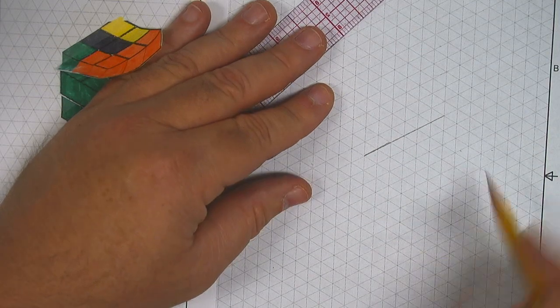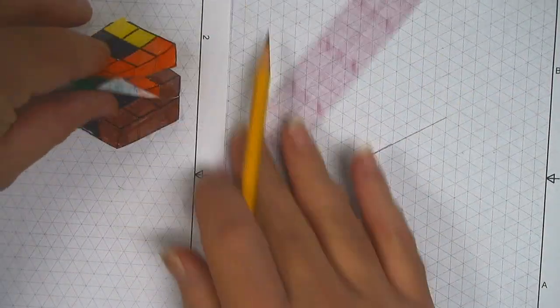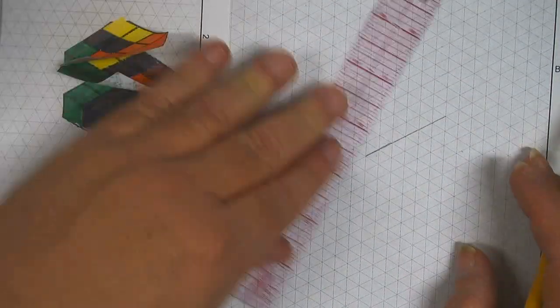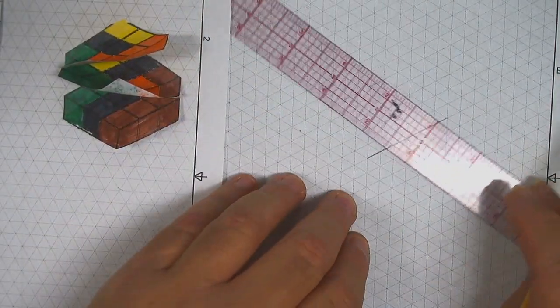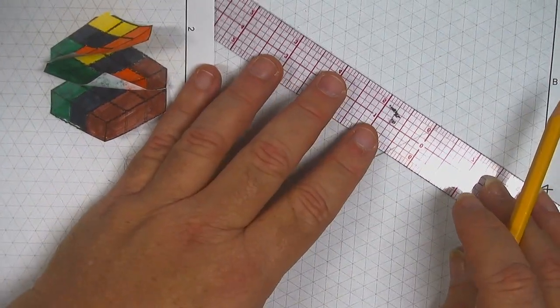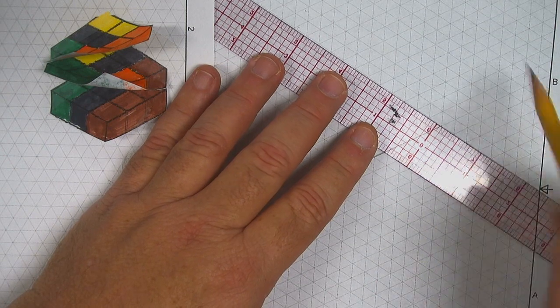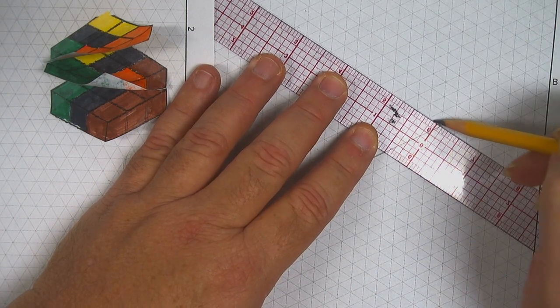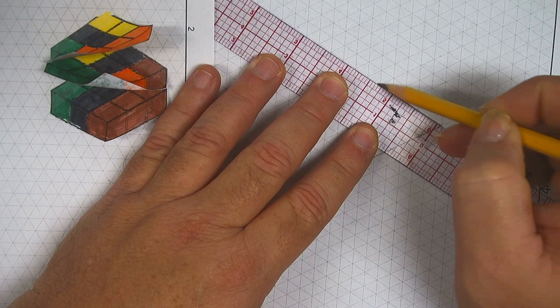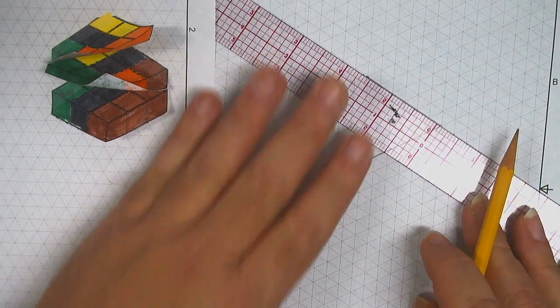Now the other side that goes up this way is also three cubes, which will be six units. So I'll make this 90 degree turn: two, four, six units.